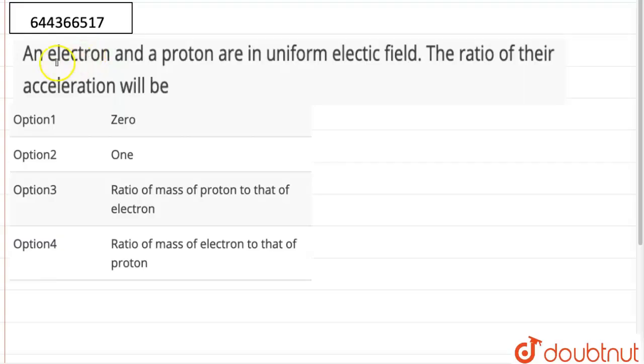Hello, so the question here is an electron and a proton are in uniform electric field. The ratio of their acceleration will be: zero, one, ratio of mass of proton to that of electron, or ratio of mass of electron to that of proton.